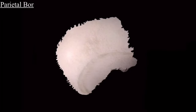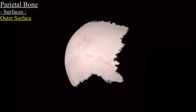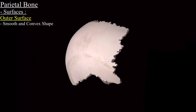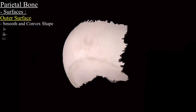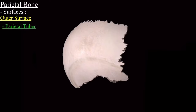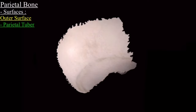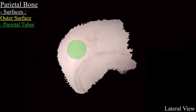We will begin our discussion with the surfaces. First one is the outer surface. As you can see, it is a smooth and convex shaped surface. On the outer surface there are three main structures to remember: the parietal tuber, the two arc lines, and the parietal foramen. The parietal tuber is the part of the outer surface with maximum convexity.